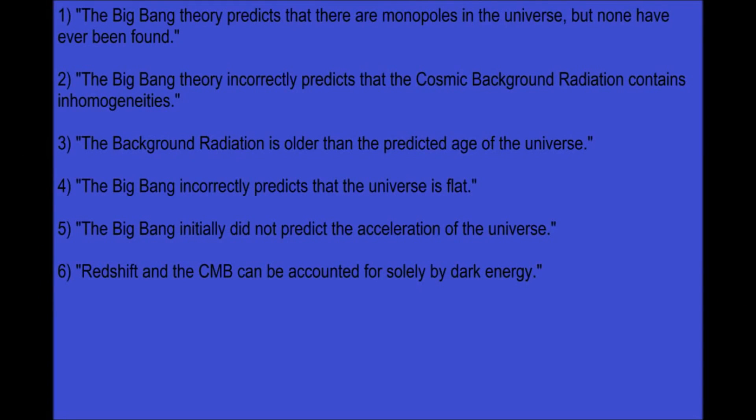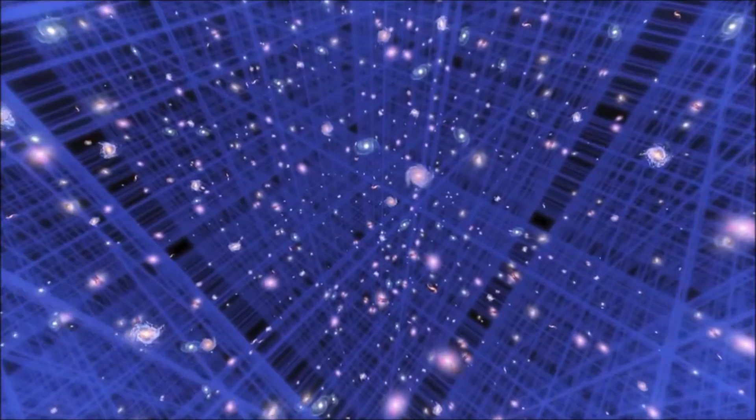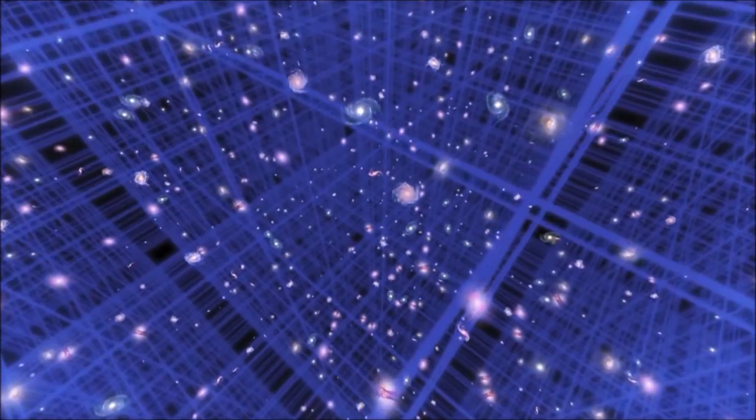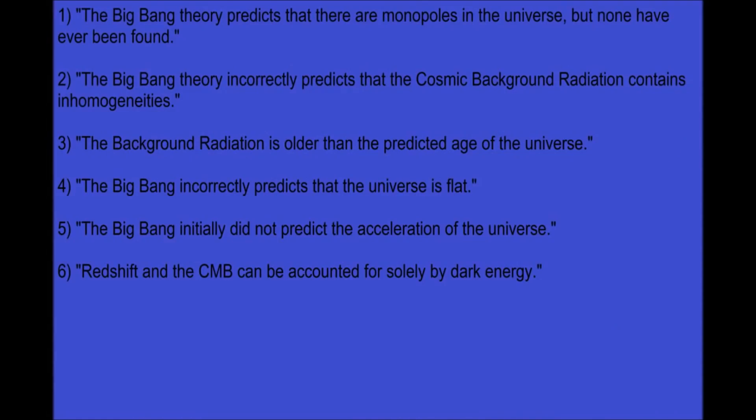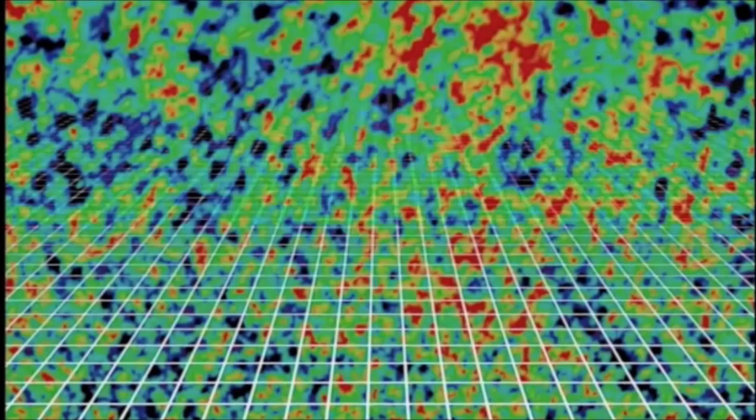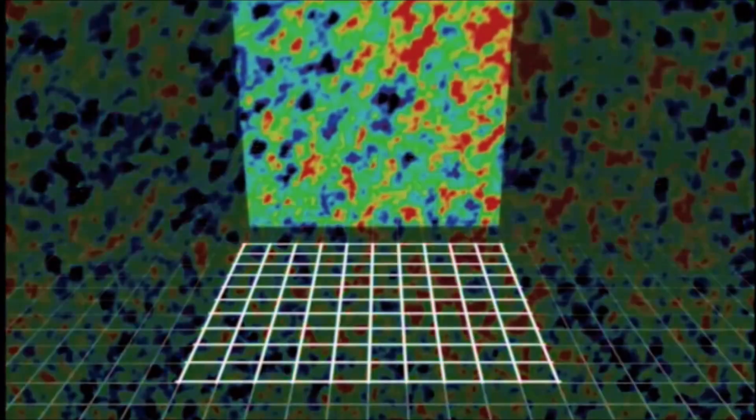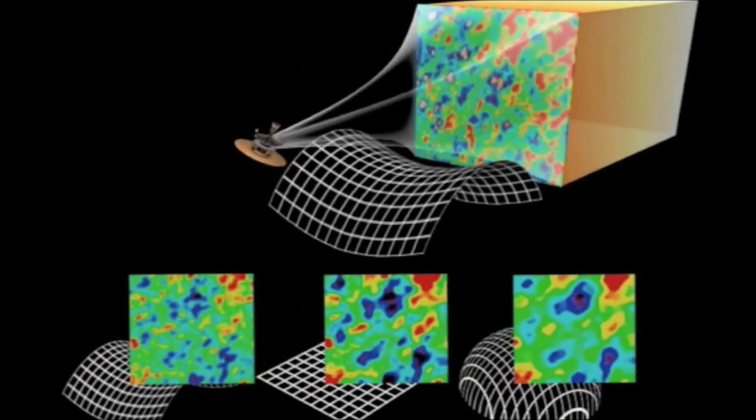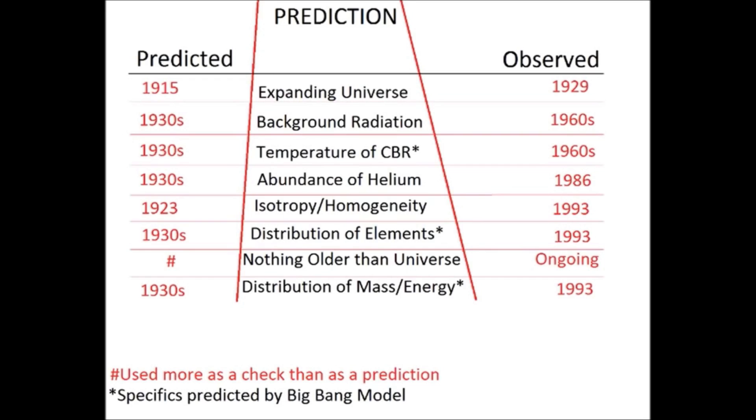Six. While we're still on the topic of dark energy, you claim that the redshift in the galaxies can be accounted for solely by dark energy. This is true. According to you, it's possible that the universe just started to expand recently but was never coiled in a singular state. You also said that dark energy can account for the background radiation. This is not true.